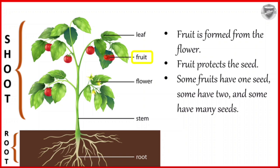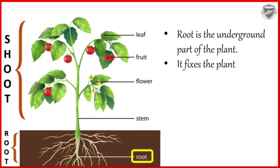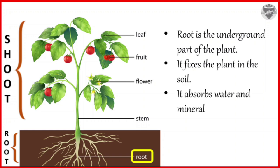Next part is root. Root is the underground part of the plant. It fixes the plant in the soil. It absorbs water and minerals from the soil.